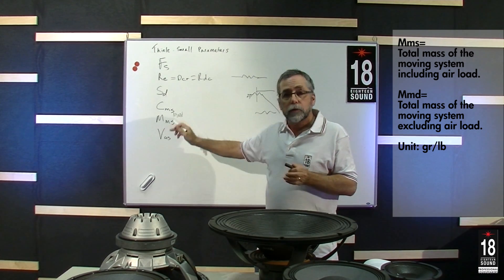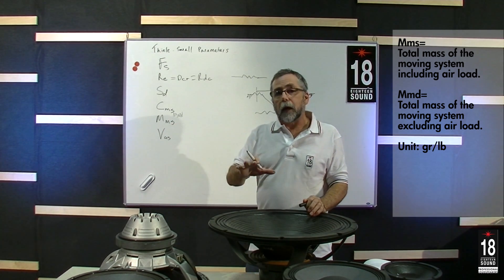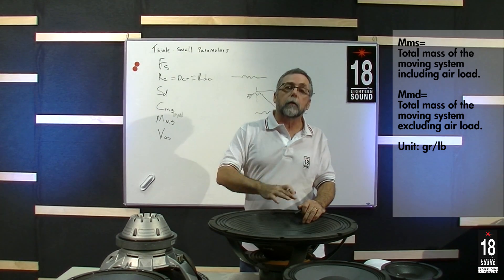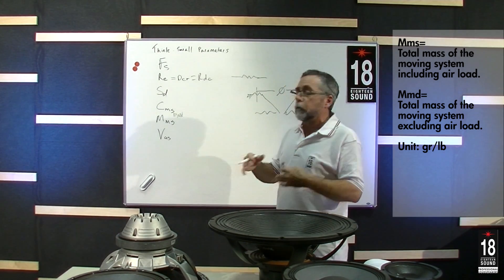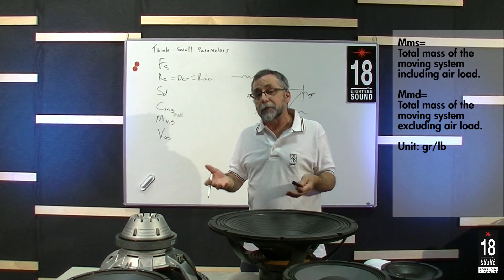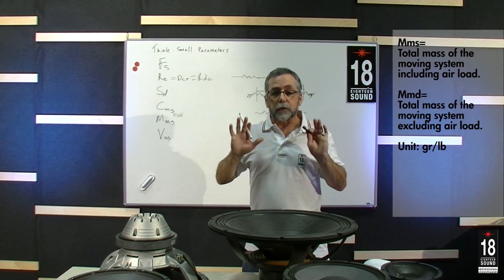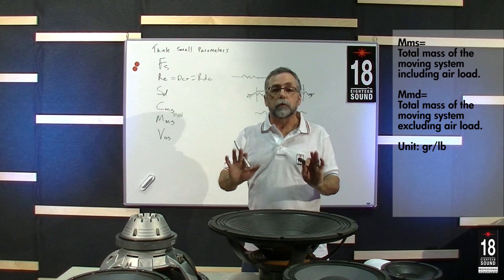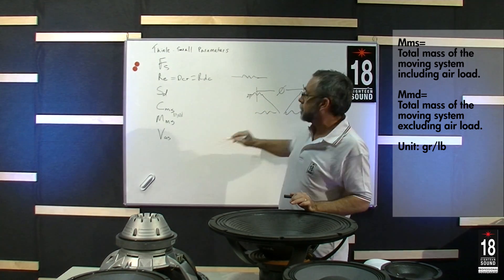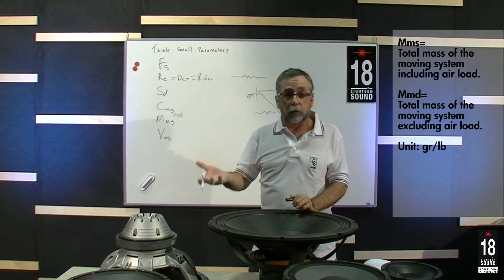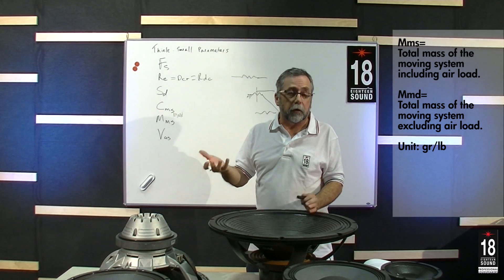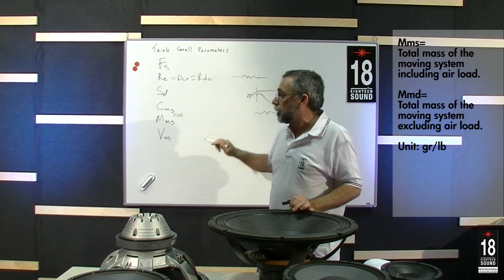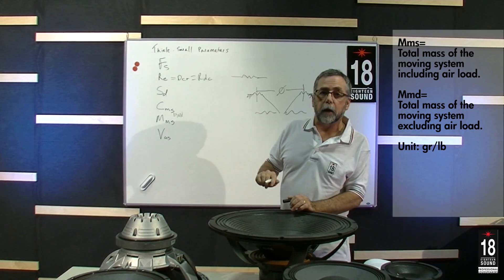The total moving mass also includes mass applied by the air that the cone interfaces with. So if you think of the fact that air has mass, that mass is actually putting a resistance of pressure on the cone. So the total moving mass is the mass of the moving parts when they're stationary on a scale, if you think of it that way, and then add the air load for total moving mass.